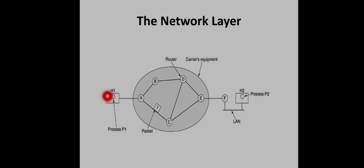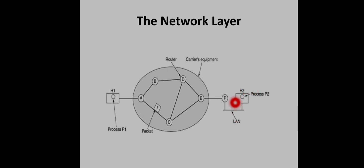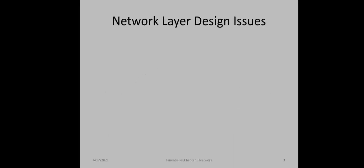Host H1 is directly connected to the carrier's router. Router A connects this host to the network, whereas H2 is connected through router F, which is actually owned or operated by the customer itself. So when a host wants to send a packet, it will send to the nearest router — suppose H1 wants to send some data, it will send to the nearest router, which may be part of the carrier's equipment or part of its own network.